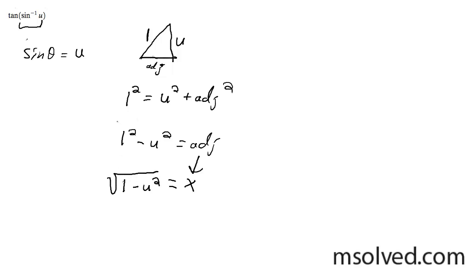I have this now, and I need the tangent, so it's simply going to be opposite over adjacent. In other words, the tangent is going to be equal to u over the square root of 1 minus u squared.